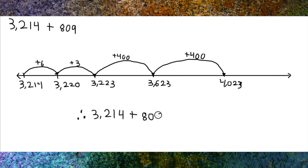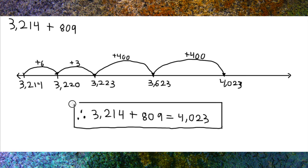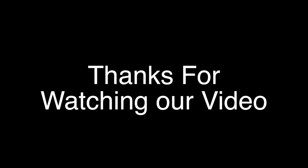As you can see, with our open number line, 3,214 plus 809 equals 4,023. Thanks for watching our video! See you next time!